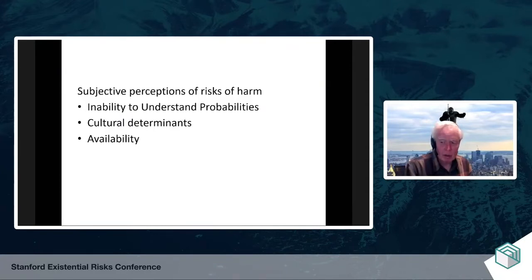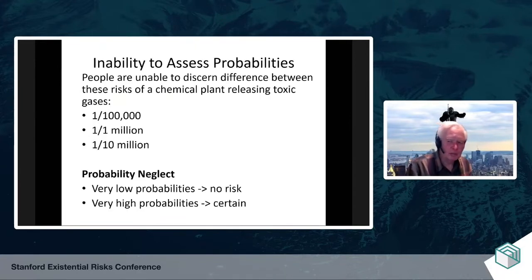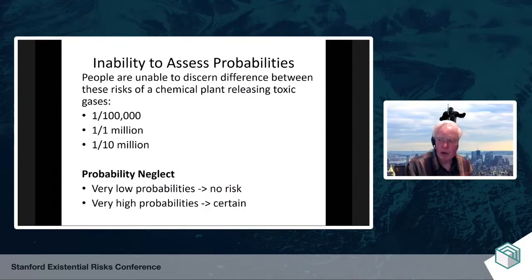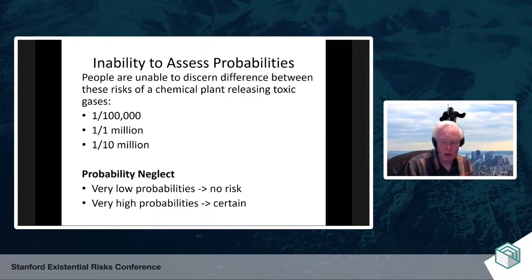One is people are unable to understand probabilities very well. Another is that one's sense that something is risky is culturally determined to a large extent. And then finally, the availability heuristic. This particular experiment on the screen gets at it: people were asked how much they would pay to avoid the risks of a release of toxic gases, where the chances were one in a hundred thousand, one in a million, and one in ten million. When you have those low probabilities, people just can't distinguish among them — they were willing to take the same action for all of them. That leads to a phenomenon Cass Sunstein called probability neglect.